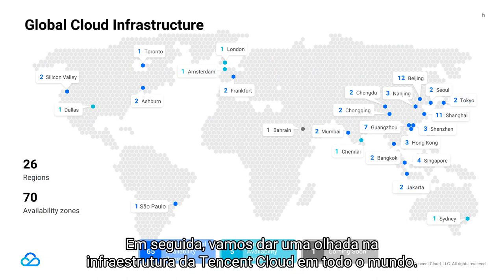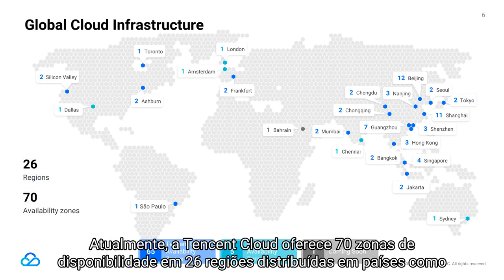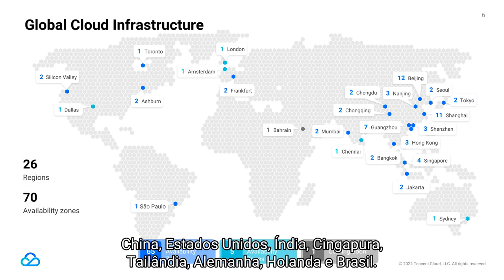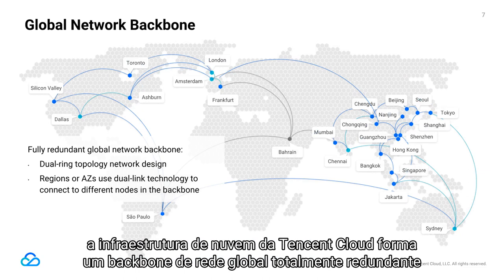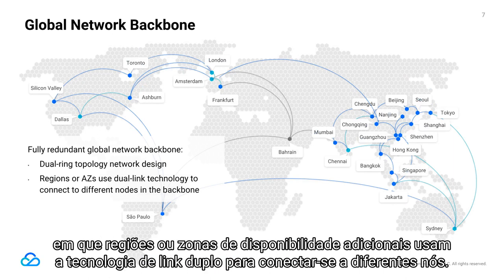Let's take a look at Tencent Cloud's infrastructure around the world. Tencent Cloud currently offers 70 availability zones in 26 regions distributed around the world, including countries such as China, the United States, India, Singapore, Thailand, Germany, the Netherlands, and Brazil. Featuring dual-ring topology network design, Tencent Cloud's infrastructure forms a fully redundant global network backbone in which additional regions or availability zones use dual-link technology to connect to different nodes.